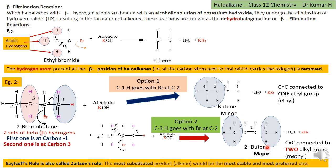This was predicted by Zaitsev, and hence it is called Zaitsev's rule. According to Zaitsev's rule, the most substituted alkene is the most stable and is the most preferred — it will be the major product. So 2-butene is the major product and 1-butene is the minor product. In beta elimination of haloalkanes, dehydrohalogenation takes place: removal of beta hydrogen with alpha halogen leads to the formation of an unsaturated compound, and the most substituted unsaturated compound is formed as the major product.